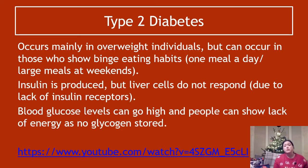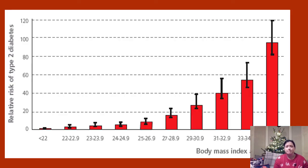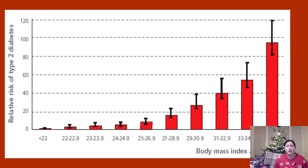There's also a link to a person's experience with type two diabetes. Type two diabetes has shown a direct link between body mass index — something we'll learn about in the obesity video — and risk of type two diabetes. Essentially, the rule is: the higher your BMI, the more you are at risk of developing type two diabetes.